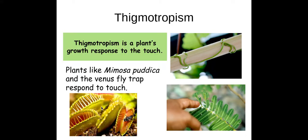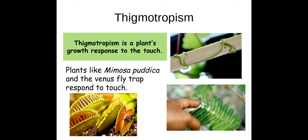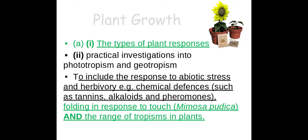We also have the Venus flytrap that responds to touch. Some plants also use touch to grow further up, using appendages to pull themselves up other plants — almost like cheating. Those are the types of tropisms we've looked at.